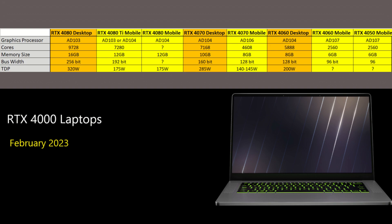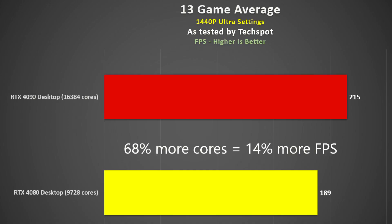The mobile 4060 will only have 2,560 cores versus 5,888 on the desktop, which is 56% less. The mobile 4050 is supposed to have the same number of cores, 6GB of VRAM and a 96-bit bus, but will no doubt have a lower TDP. We have seen with the desktop 4080 versus the 4090 that the huge difference in cores doesn't necessarily translate to the same reduction in performance, especially at 1080p and 1440p.